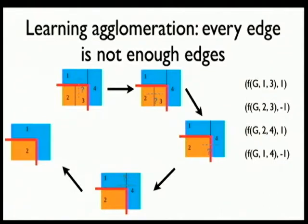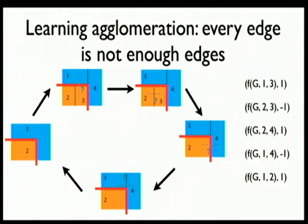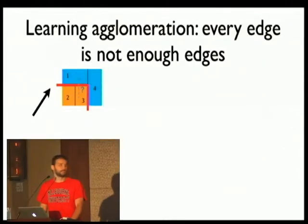You've learned basically every label on that path. Now you have a new agglomeration function and you can do this again, getting closer and closer to a perfect agglomeration. Then you start over, and you can do this many times.